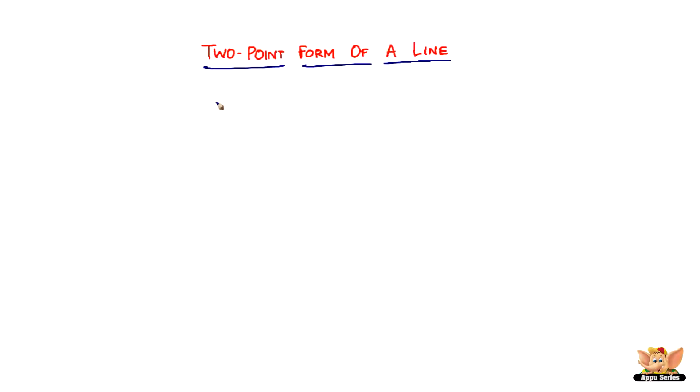In this video, we're going to look into another form of a line which is called the two-point form of a line. So let's see what it is.